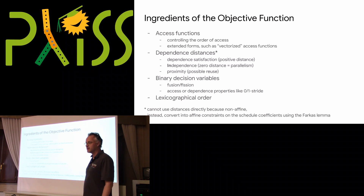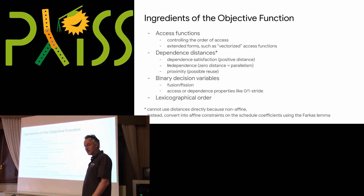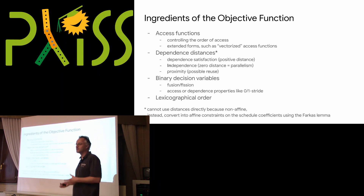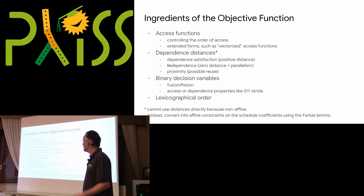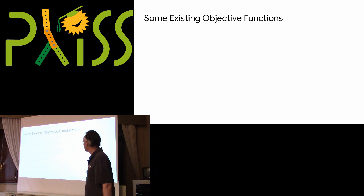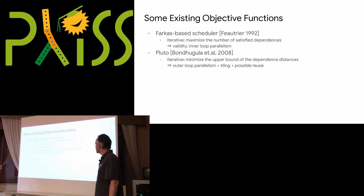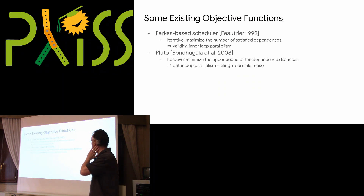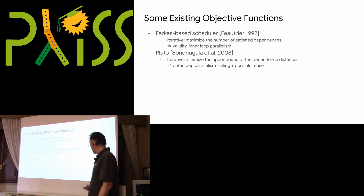I'll conclude the presentation with some approaches that are not linear, that don't necessarily rely on linear programming. But the state-of-the-art in polyhedral compilation is to try to cram everything into a linear problem. The main papers are the Fourier Scheduler from 1992 and the Pluto algorithm and tool from 2008 by Uday Bondhugula.